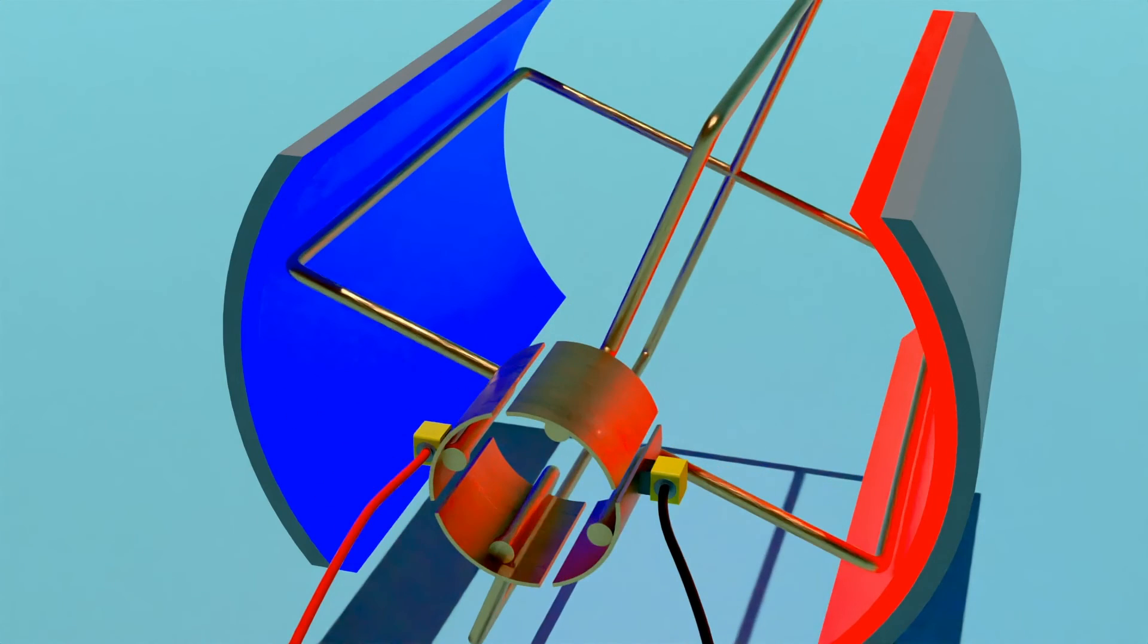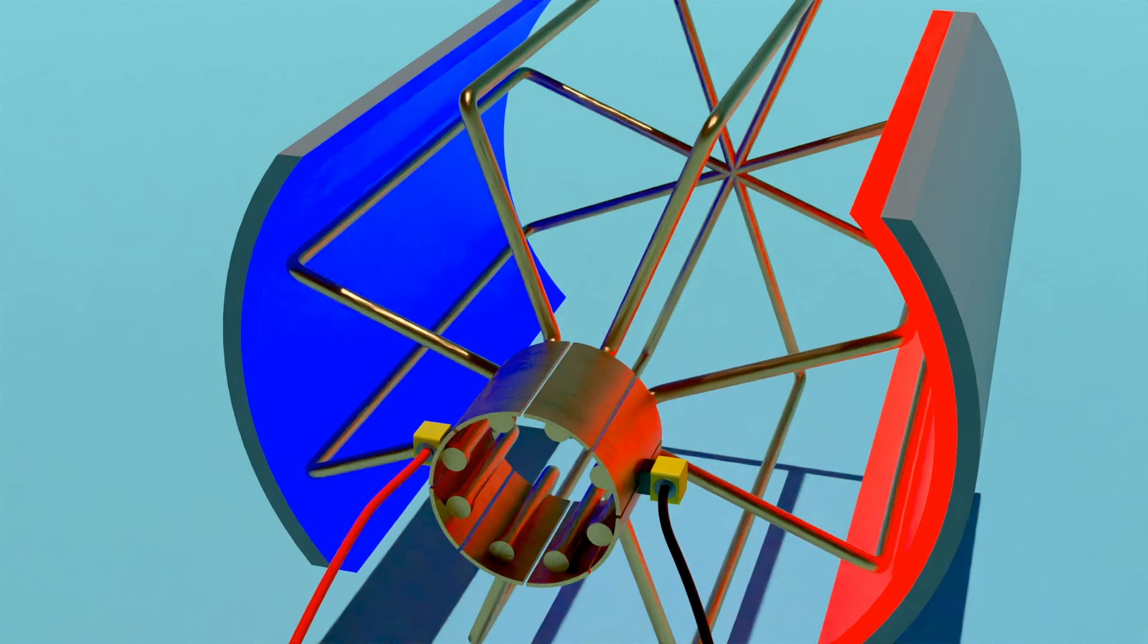Some electric motors will add many loops to the armature. This ensures that there will be a continuous spinning motion on the motor.